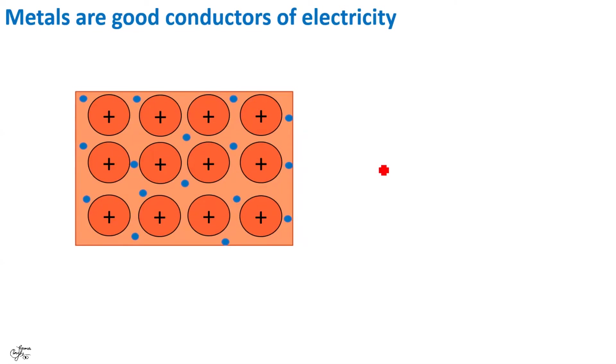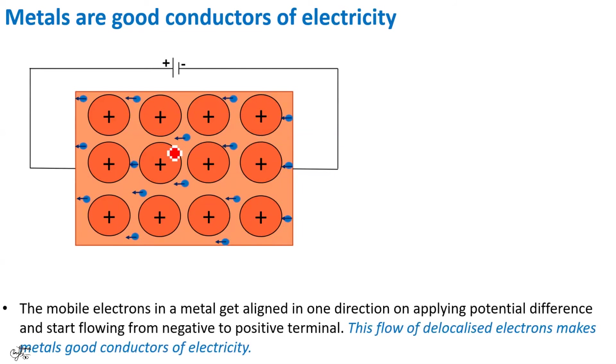Moving to the next property. Metals are good conductors of electricity. That is, they allow current to pass through them. In a metal, electrons are free to move in any direction. That is, there is a random movement but no net movement of electrons. By net movement, I mean in a particular direction. On applying electric field or a potential difference, for instance, by connecting a metal strip to a battery, these electrons get aligned in one direction and start flowing from negative to positive terminal. This flow of electrons make them good conductors of electricity.